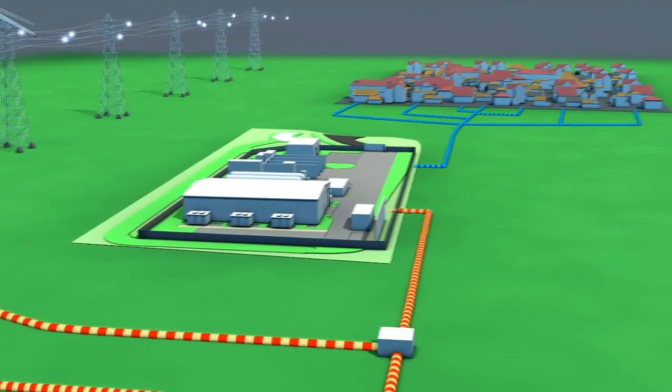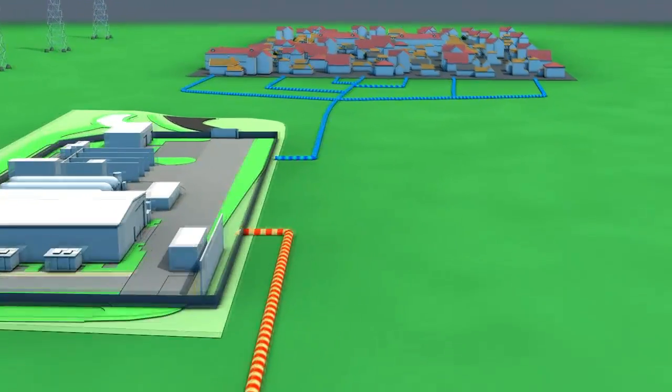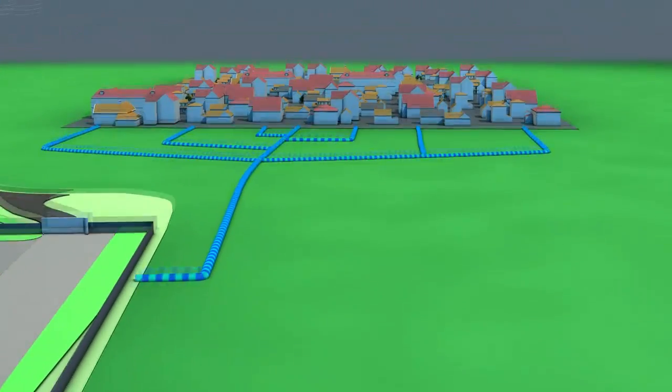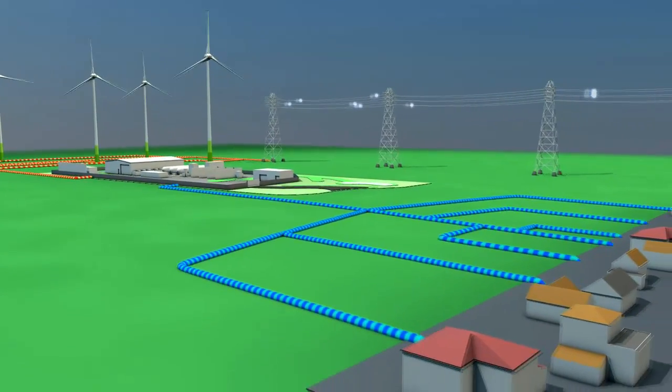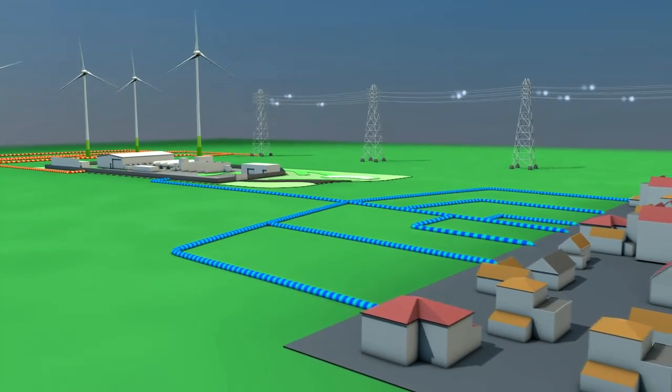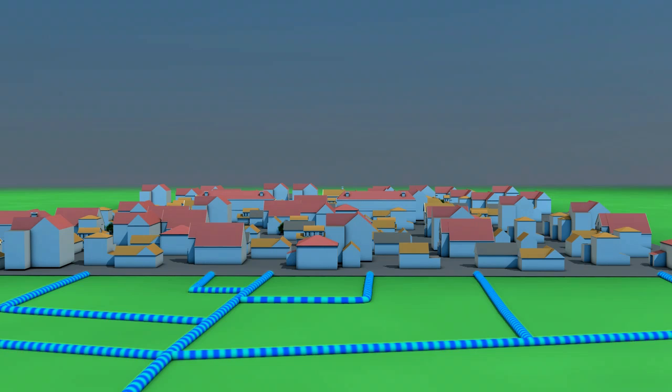This means every time when more renewable power is produced than required or can be transported by the power grid, the excess energy can go into the natural gas grid and thus be available over a long time period. For example, the wind-made gas can also be used by households for heating in winter.